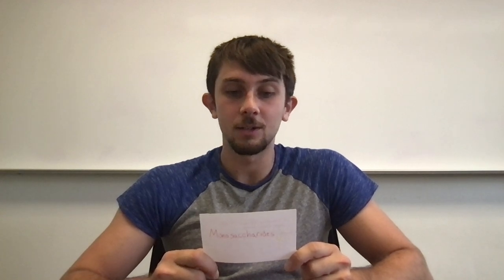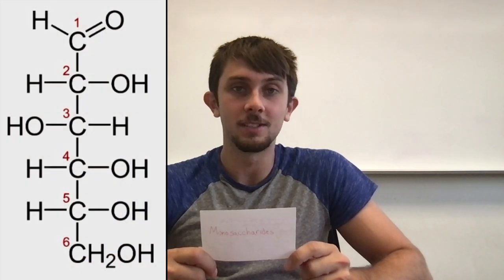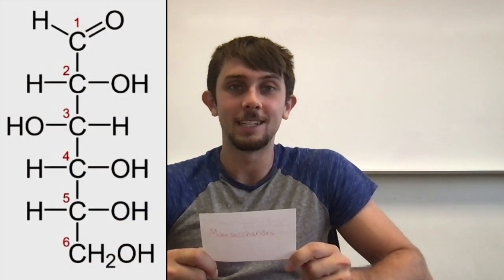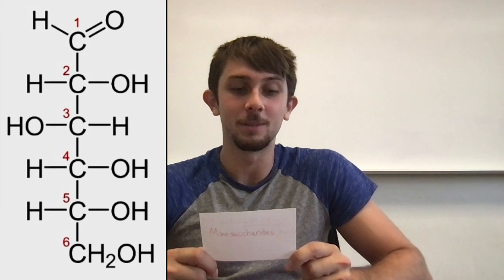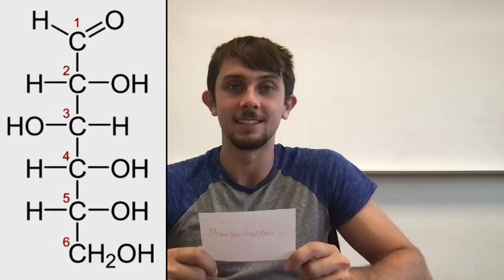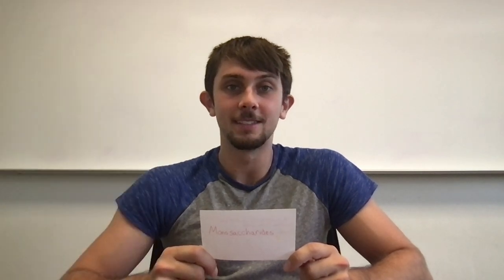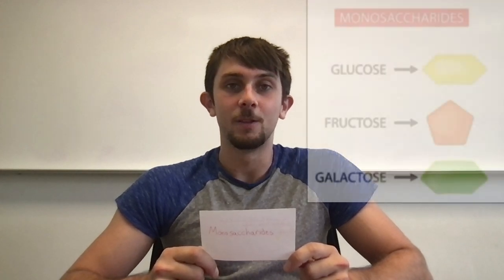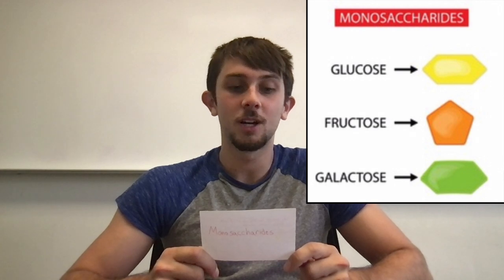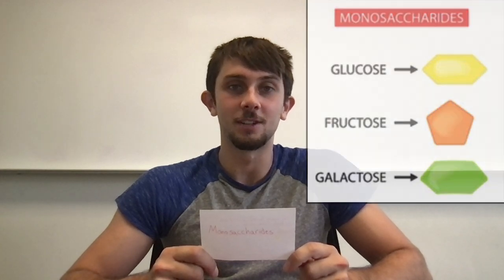Monosaccharides are the only absorbable form of carbs — the single sugar unit. The structure of a monosaccharide is C6H12O6 — so in chemistry terms, 6 carbons, 12 hydrogens, and 6 oxygen atoms — and this is the only absorbable form of carbohydrates. They are constructed as glucose, fructose, or galactose.